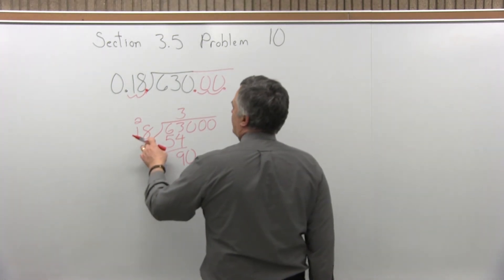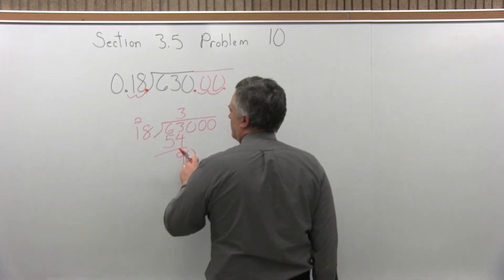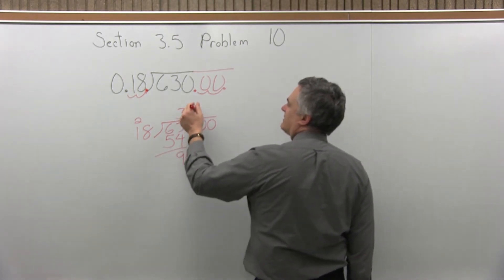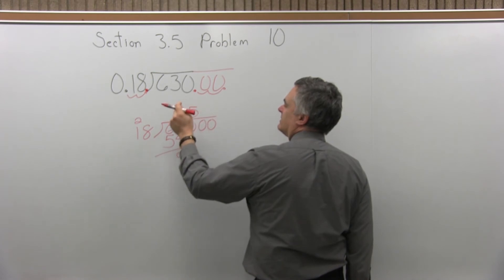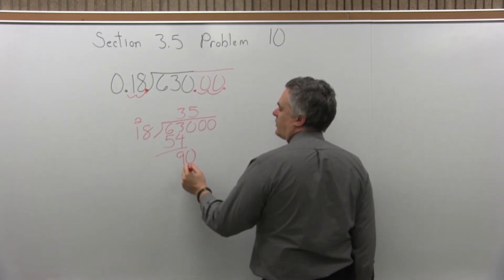Now, 18 divides into 90. I think it goes in exactly 5 times. So let's try 5. That should work. 5 times 8 is 40.